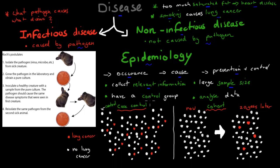We sometimes have a control group, especially in case control studies. And we always have to analyze the data — we collect that information from lots of people and then analyze it to find the links between cause and disease, and between where it happens and how we can prevent it.